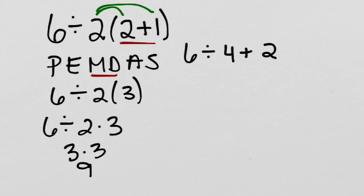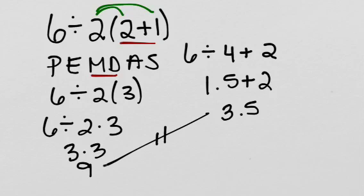Following the order of operations here, again, we would do the division first, and 6 divided by 4 is 1.5 plus 2 gives us 3.5. But wait a minute. These are not equivalent answers.